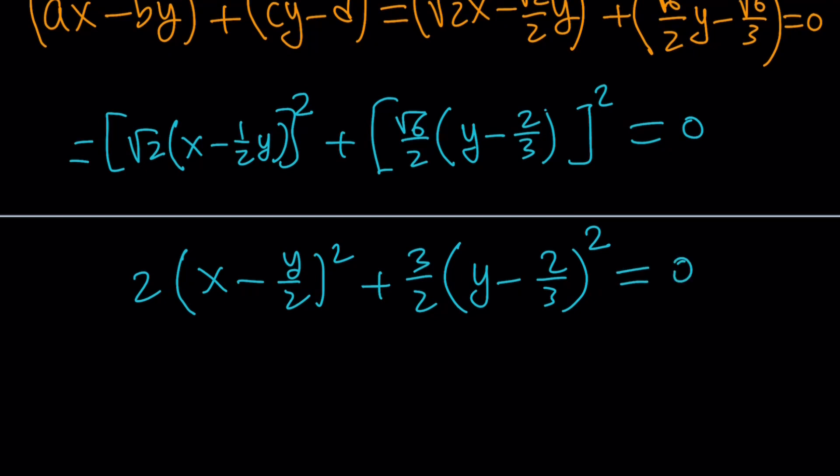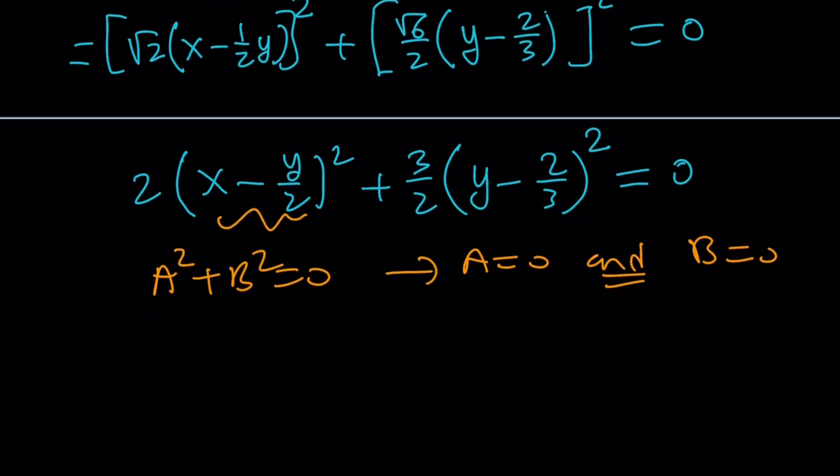Notice that if the sum of 2 squares is equal to 0, like when you have something like a squared plus b squared is 0, then if a and b are real numbers, this implies a equals 0 and b equals 0. So from here we can say that, hey, this is equal to 0, so x is equal to half of y. From here we can safely say that y is equal to 2 thirds. Since x is half of it, x must be 1 third.